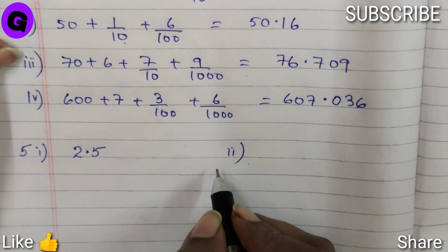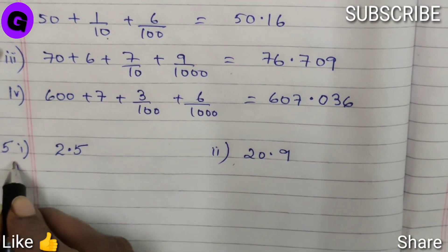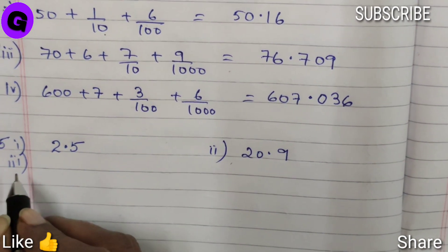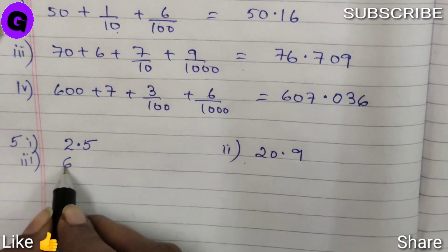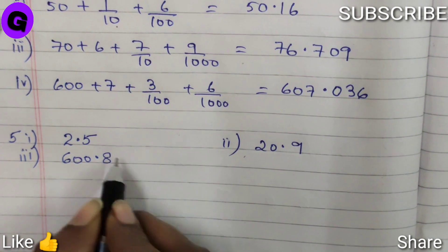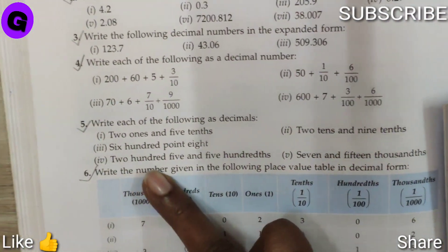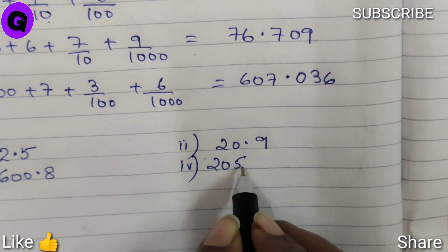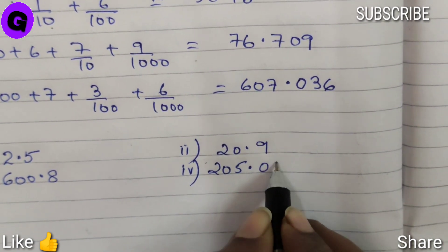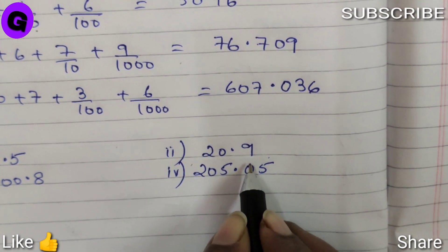Number 2, it says 20 and 9 tenths, 20 tenths means 20.9. Number 3, it says 600.8, 600.8. Number 4, it says 205, so 205 and 500, that means point 0, 5, 5 is at hundredths place and no figure is at tenths place, so we will write a zero here.